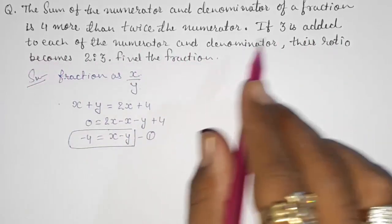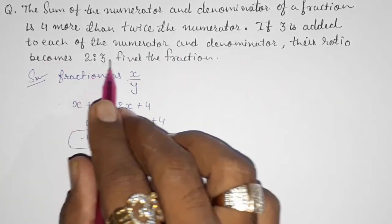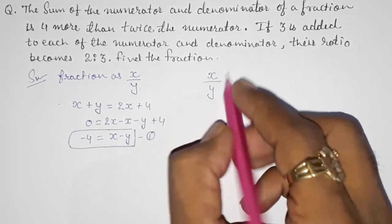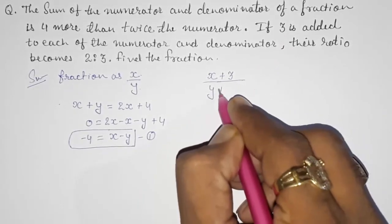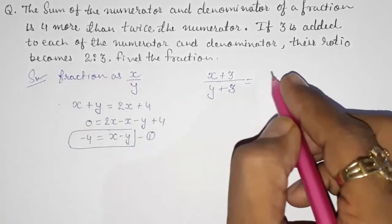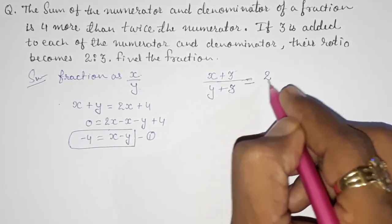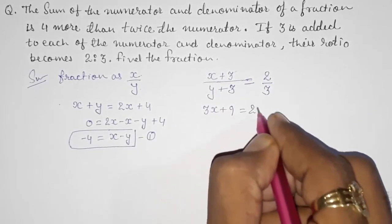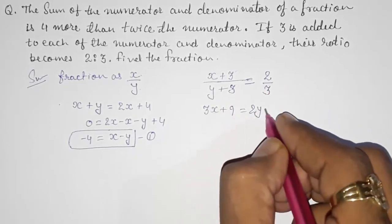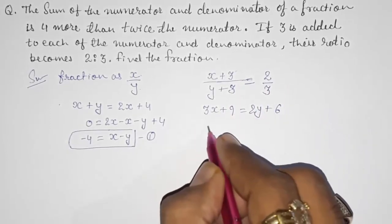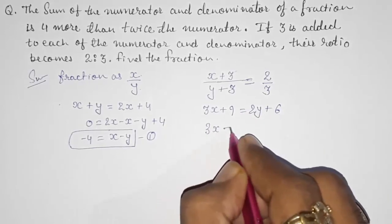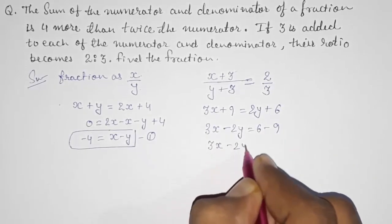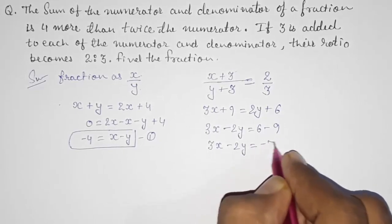If 3 is added to both numerator and denominator, the ratio becomes 2:3. So (x + 3)/(y + 3) = 2/3. Cross-multiplying: 3(x + 3) = 2(y + 3), giving 3x + 9 = 2y + 6. Rearranging: 3x − 2y = −3. This is equation two.